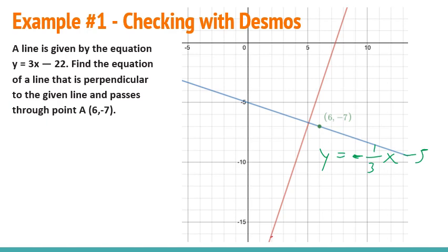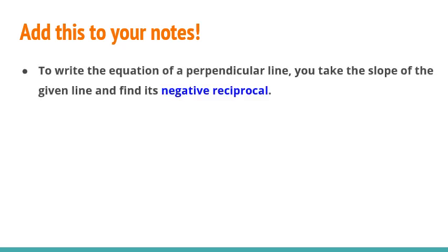So we have y equals negative 1 third x minus 5. That's our line in blue here. Here's our original line. You can see that our line in blue, it passes through 6, negative 7. And just visually speaking, we can see that we're making a perpendicular line.